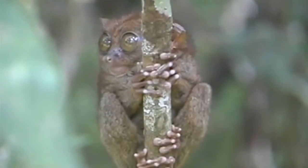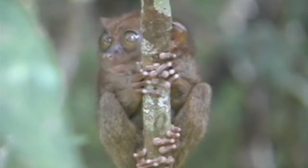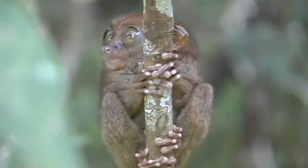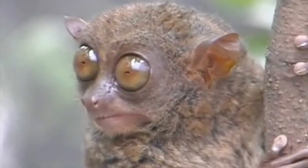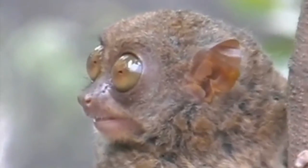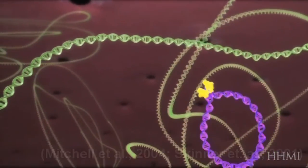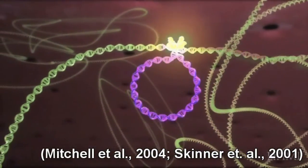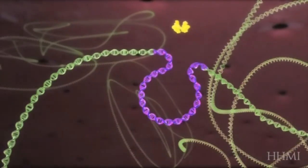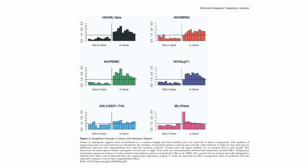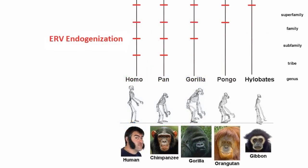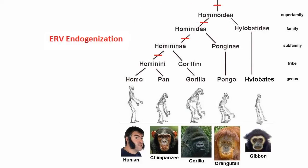Since humans don't, and or can't, regularly procreate and have fertile offspring with members of these species, and thus don't make sizable contributions to their gene pools, and vice versa, their inheritance cannot have resulted from unions of modern species. As previously mentioned, parallel integration is ruled out by the highly random target selection of integrase. And even if it was far more target specific than observed, it would require so many simultaneous insertions and endogenizations that the evolutionary model would still be far more parsimonious.